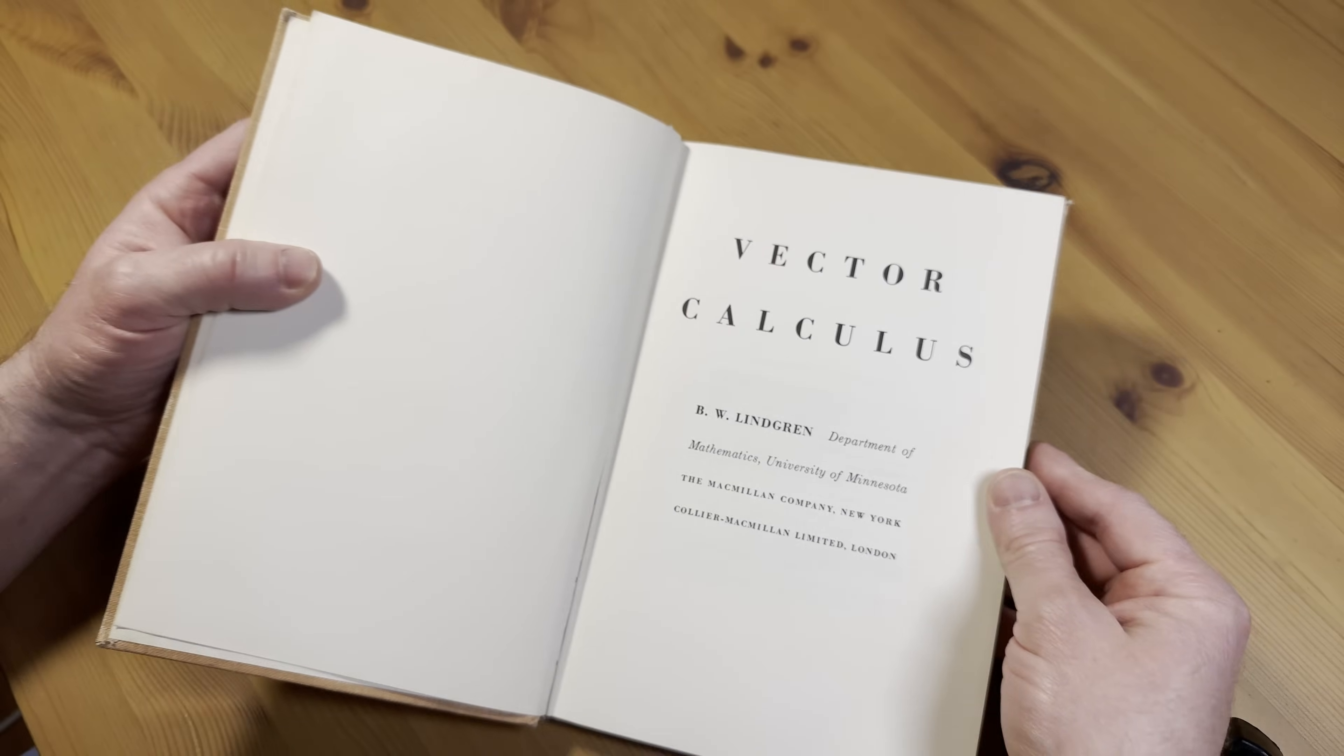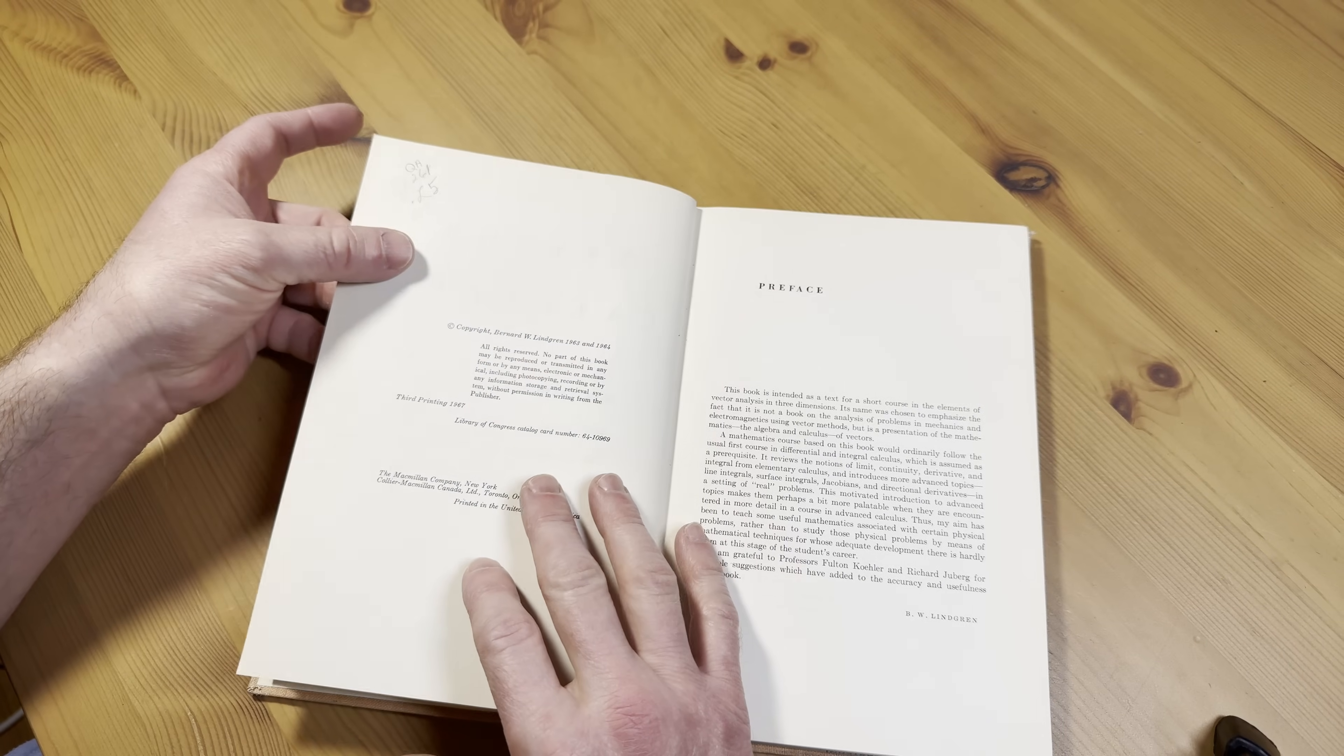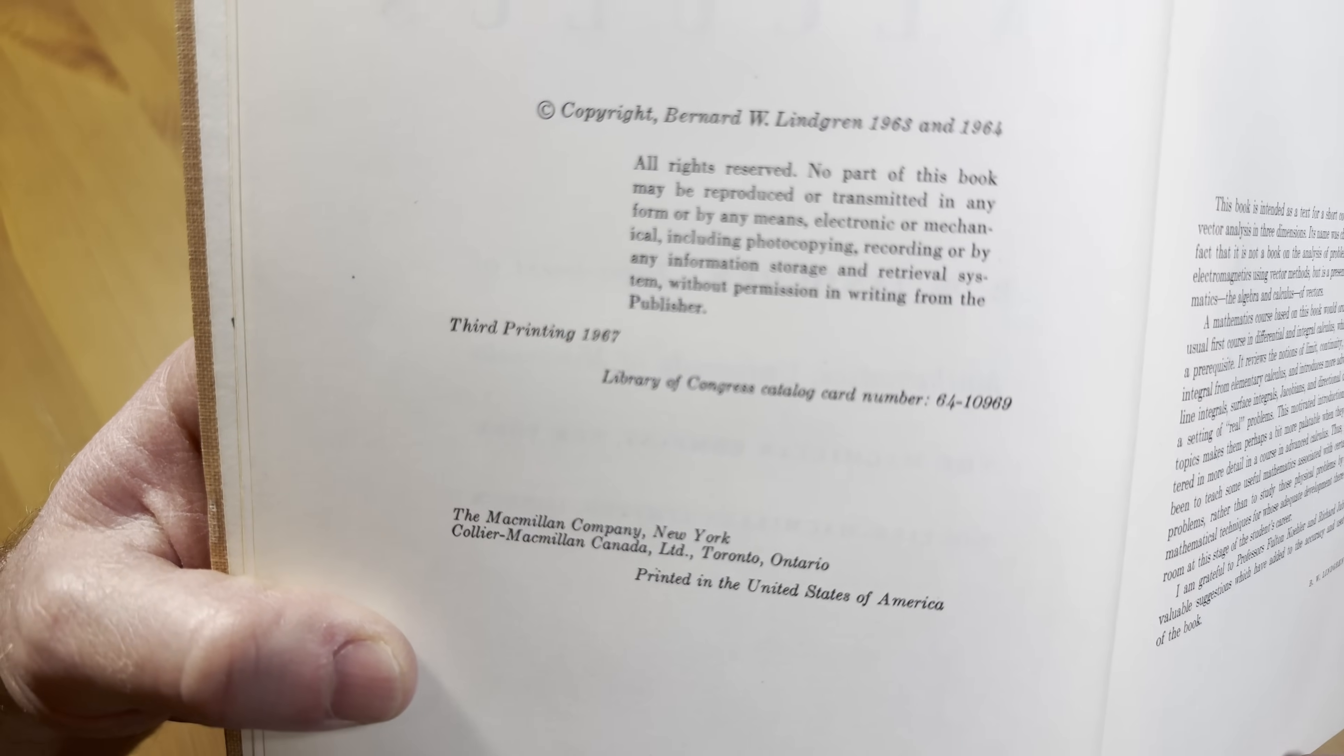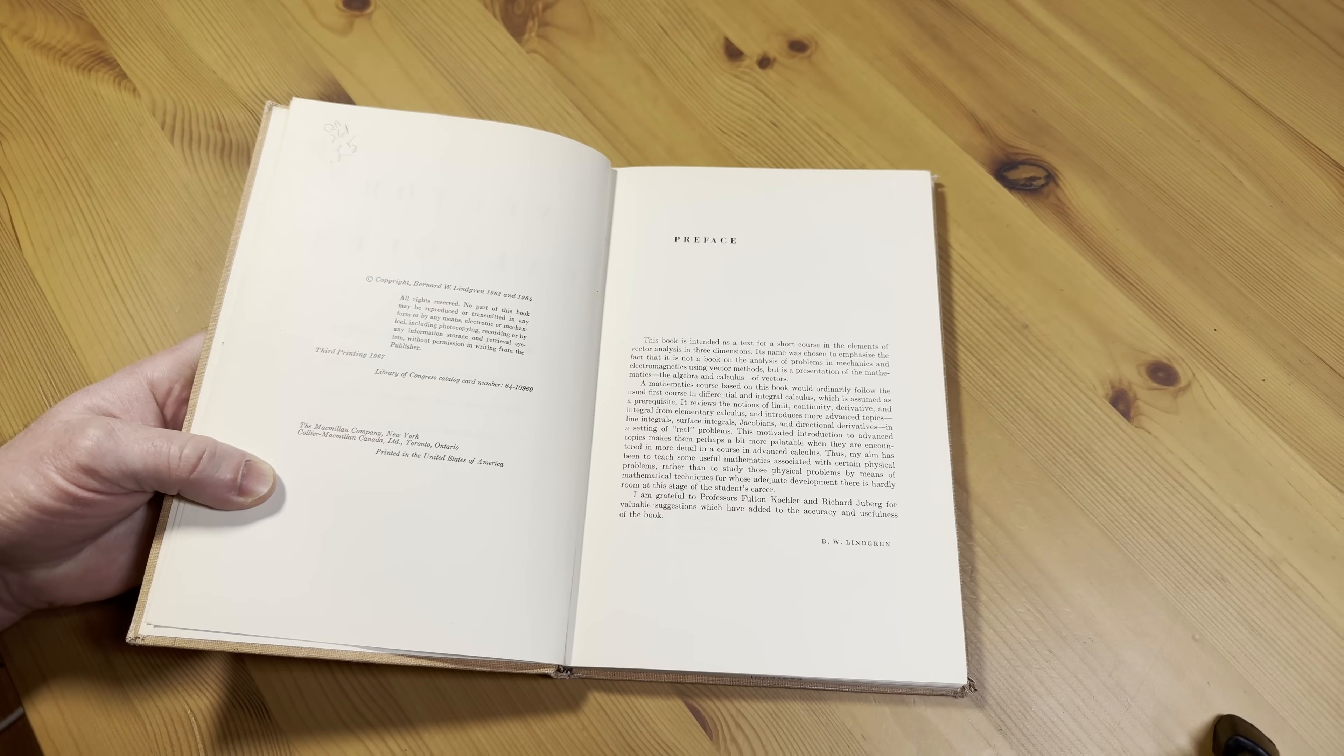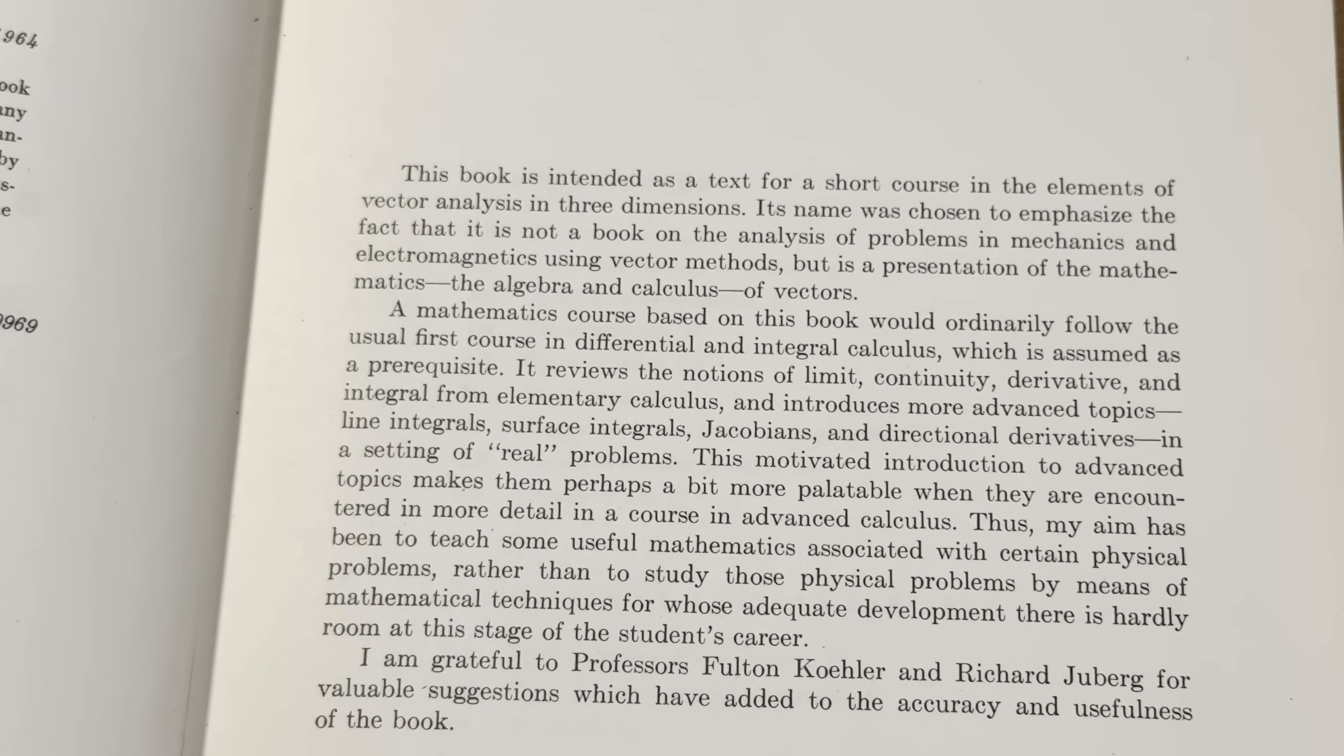The typesetting is very good in this book. I feel like they did a really good job for a book from this era. Here you can see the copyright, super old, 63 and 64. This would be the third printing 1967.